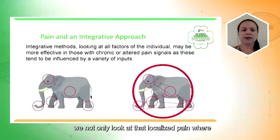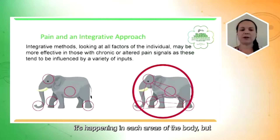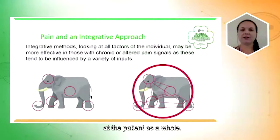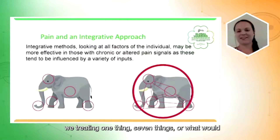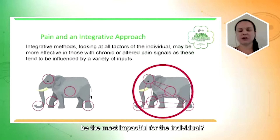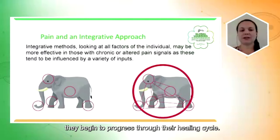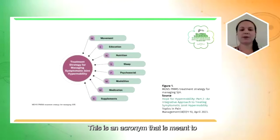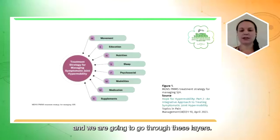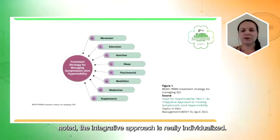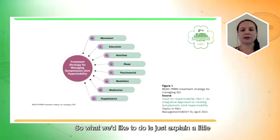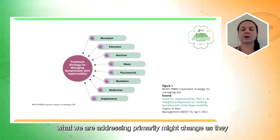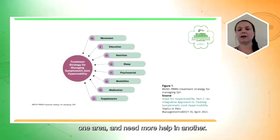With an integrative approach, we look not only at localized pain in each area of the body, but how those areas interplay with other things experienced in different systems — and we look at the patient as a whole. We get a good idea of whether we're treating one thing, seven things, or what would be most impactful for the individual. This can change and shift as they progress through their healing cycle. This framework comes from an article published this year that Dr. Linda Blustein participated in — an acronym meant to help sort out these layers.